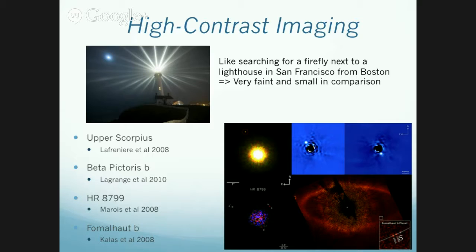For direct imaging, you need a high-contrast imaging system. Think of a firefly next to a lighthouse in San Francisco seen from Boston — that gives you the idea of how faint a planet is relative to its star. Before GPI, there was another system — one our group is very interested in is HR 8799, one of the first systems with three or four directly imaged planets. Some planets are embedded in disks. These were discovered directly, not via spectroscopy or transits.